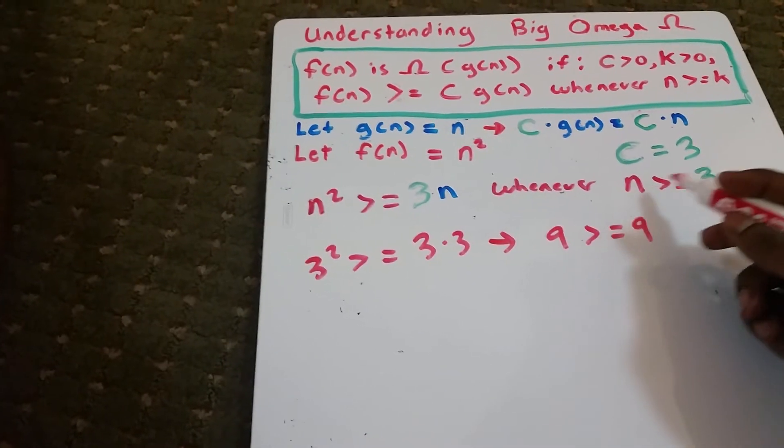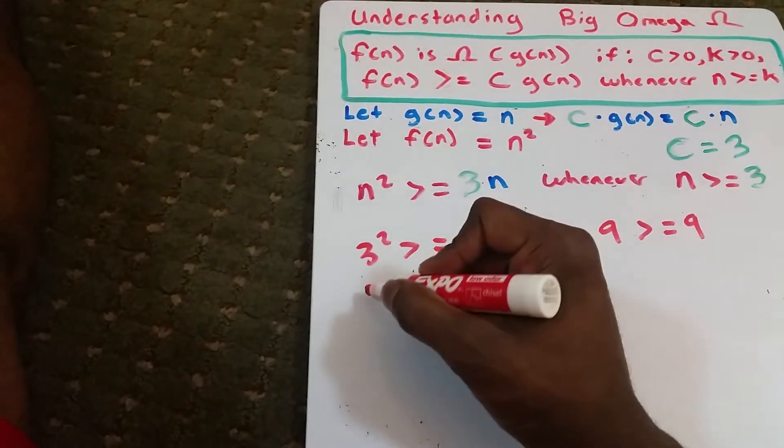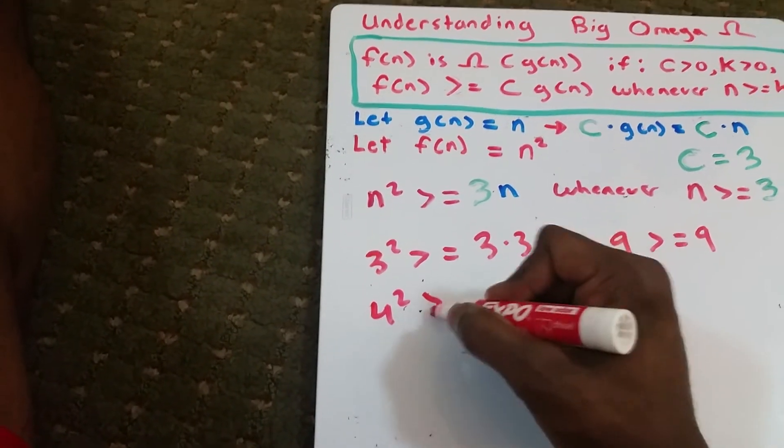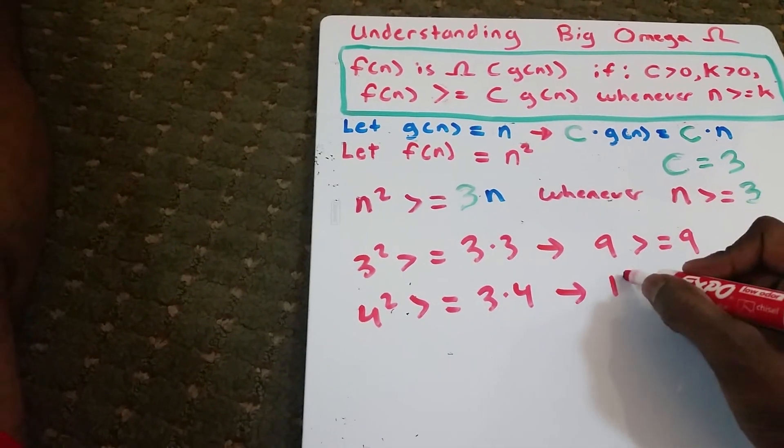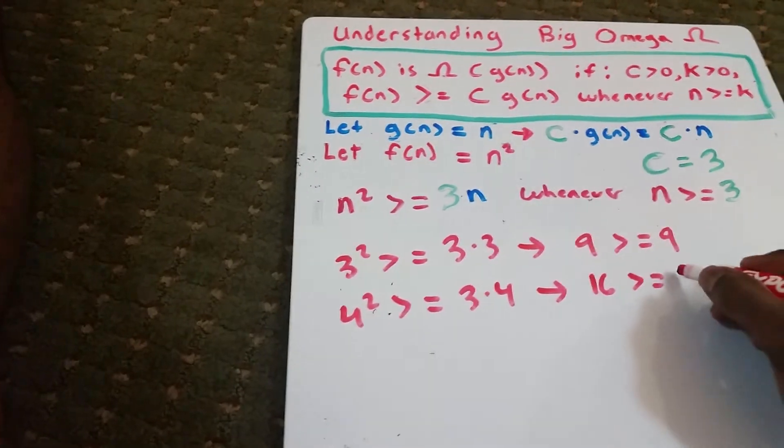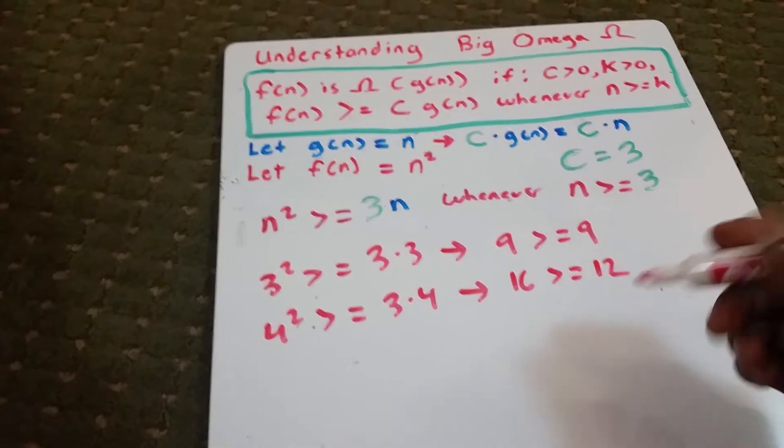Let's try another value greater than 3. Let's try 4. So we get 4 squared is greater than or equal to 3 times 4. This implies that 16 is greater than or equal to 12. That's also true.